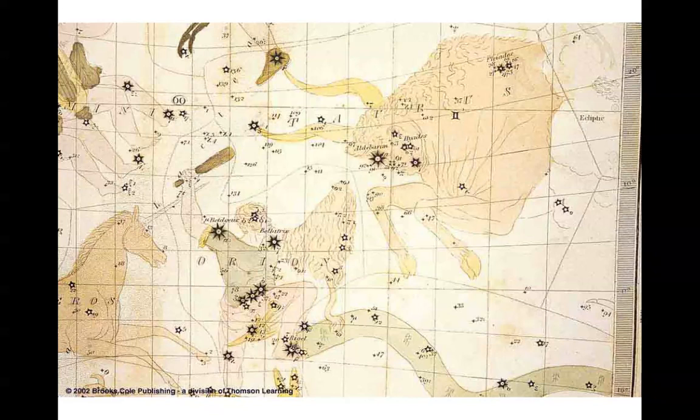We can take that pattern and remember it by showing ourselves what it resembles on the sky. So, here you see Taurus the bull on the right, and you see Orion, our friend Orion the hunter here in the middle, with his stars laid out, and what they resemble helps us remember where we are and what's going on.